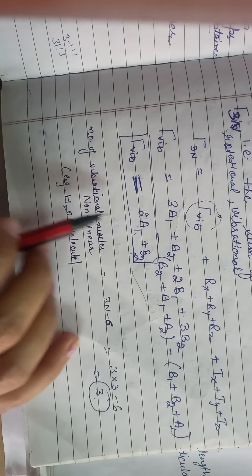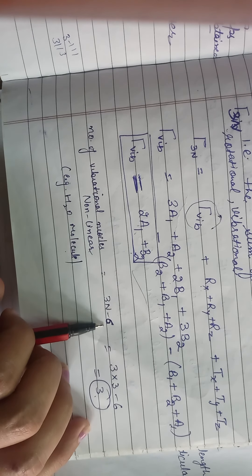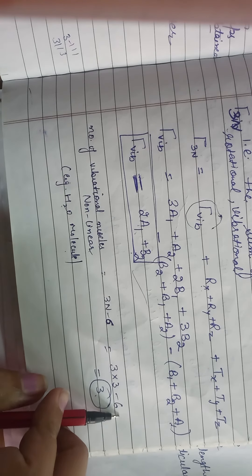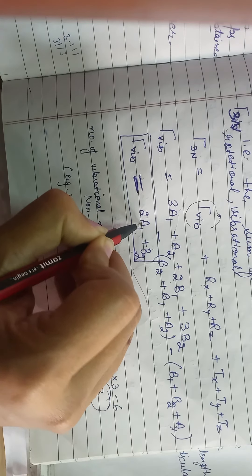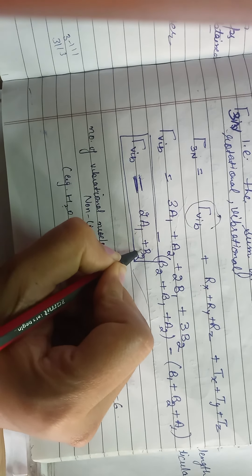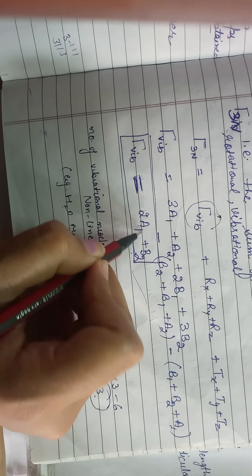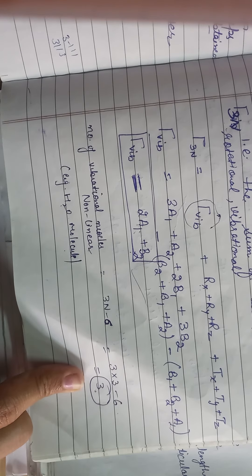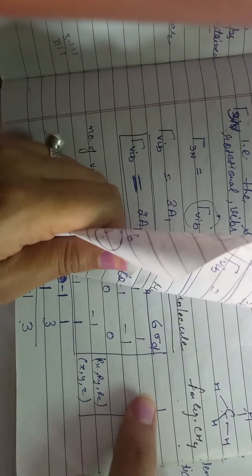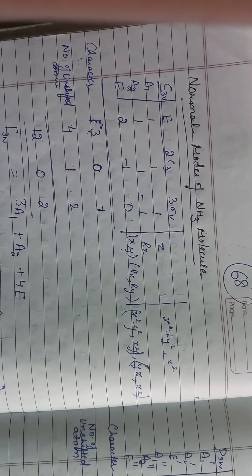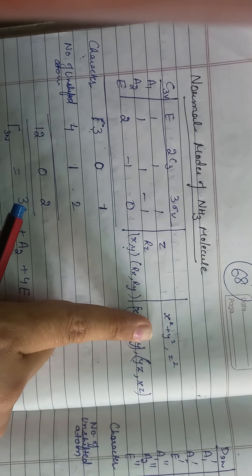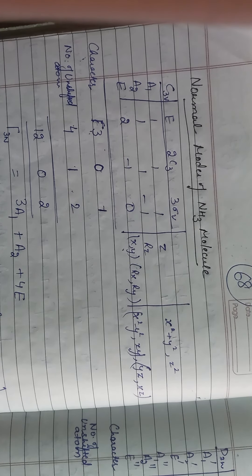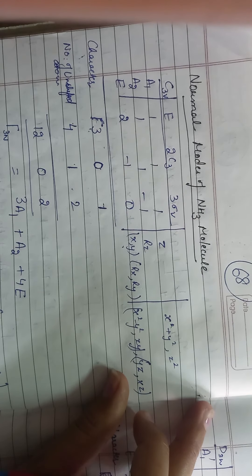Uske baad kya karna hai — jo new concept yahan aakar add hua hai vo kaun sa hai: tau_3n. Tau_3n mein kya hai: sum of translational, rotational, and vibrational. Total molecule ke andar jo vibrations hongi, woh vibration plus rotation — x axis ke along, y ke along, z ke along — translational x ke along, y ke along, z ke along. To tau_3n ka relation aapke paas yeh raha. Aap yeh wala relation yahan substitute kar diya. Ab rz ke liye character table mein dekhte hain — rz ke saamne kaun sa symbol hai: A2.